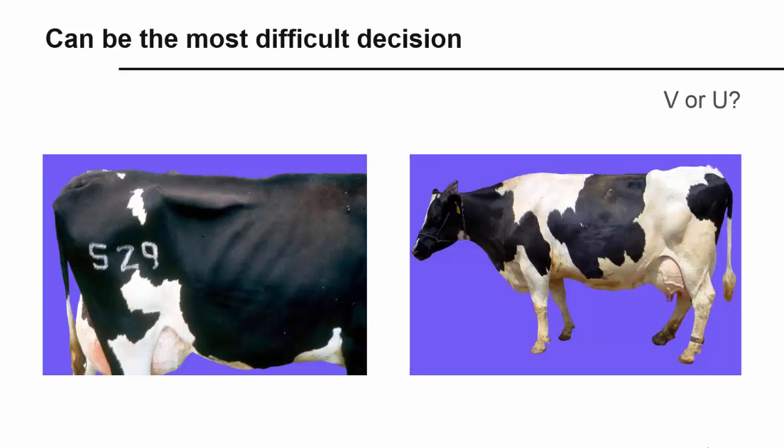This decision may be the most difficult one in the body condition scoring process, especially if the cow is near a score of 3.0 or 3.25. If the difference between a U and a V is not clear, move to the rear of the cow and observe the same angle between the hooks and pins. It may also help to evaluate the angularity of the hooks and pins.